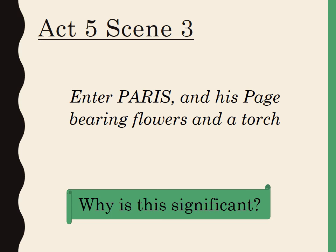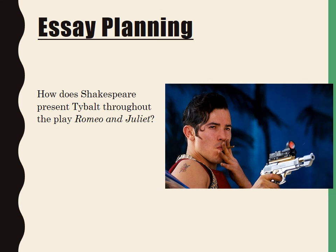If nothing else, remember the words 'flowers' and 'torch' from this stage direction. If you're asked about Paris, this would be a really good stage direction to use to analyse his character. To finish, if you want to practise using any of this information, here's an exam question you could have a go with — you could write the whole thing, or just one paragraph about stage directions and what they show about Tybalt, and I'd happily mark whatever you produce.